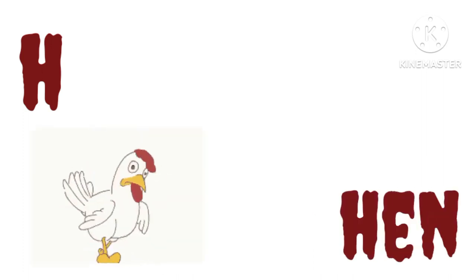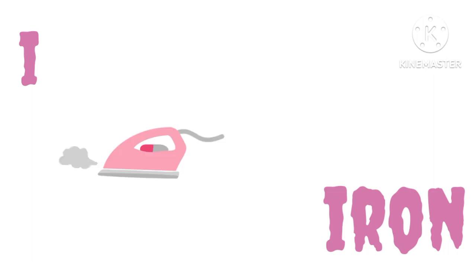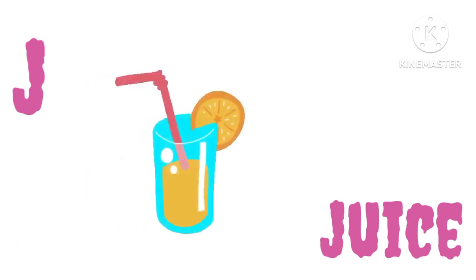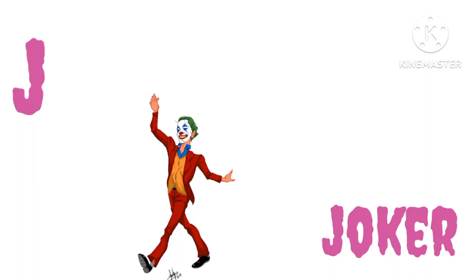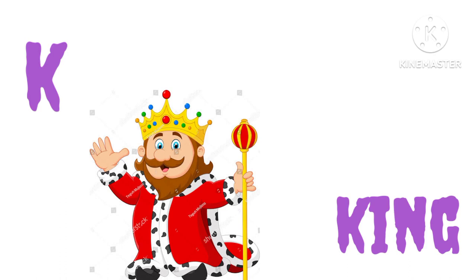H for horse, H for hen, H for head. I for ice cream, I for ink, I for iron. J for jug, J for juice, J for joker. K for kite, K for king, K for kangaroo.